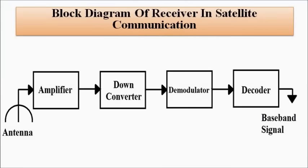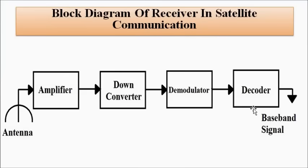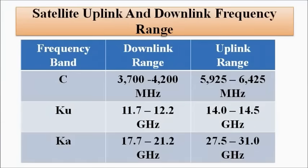The same process happens in reverse at the receiving earth station. The antenna receives the signal from the satellite. The amplifier again amplifies the signal because energy loss occurred over the long distance. The down-converter shifts the signal back to the original frequency range. The demodulator extracts the original message signal from the modulated version. Finally, the decoder converts the bit stream back into the original analog form, so we recover the original message signal.